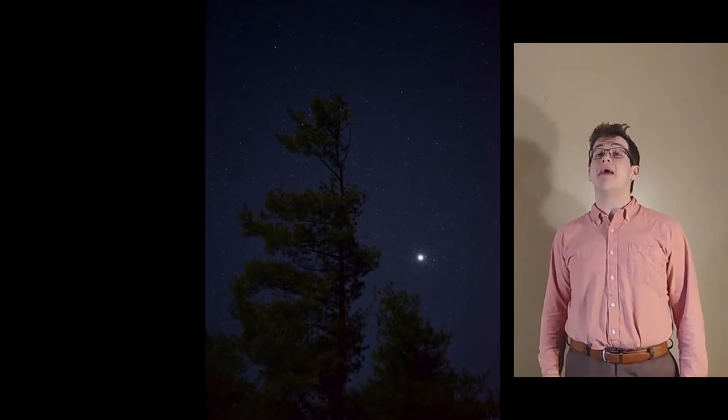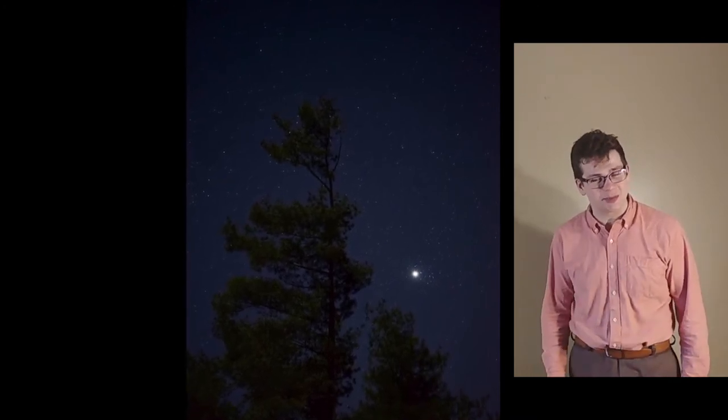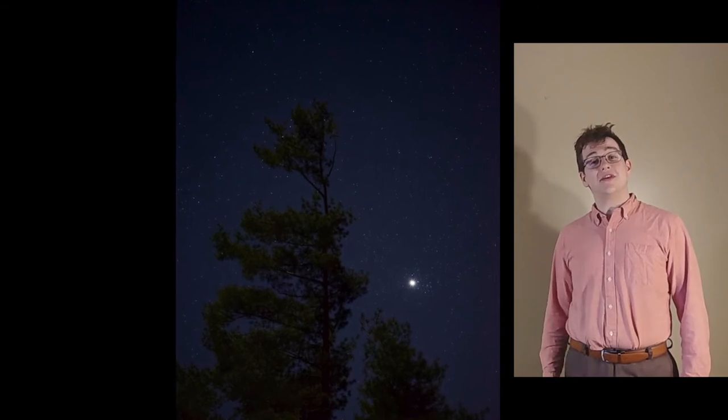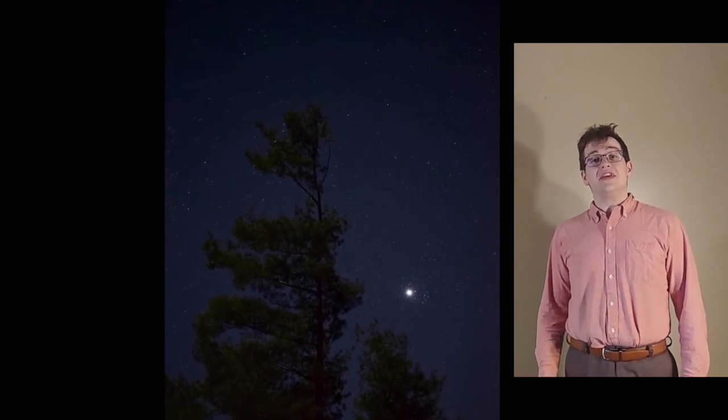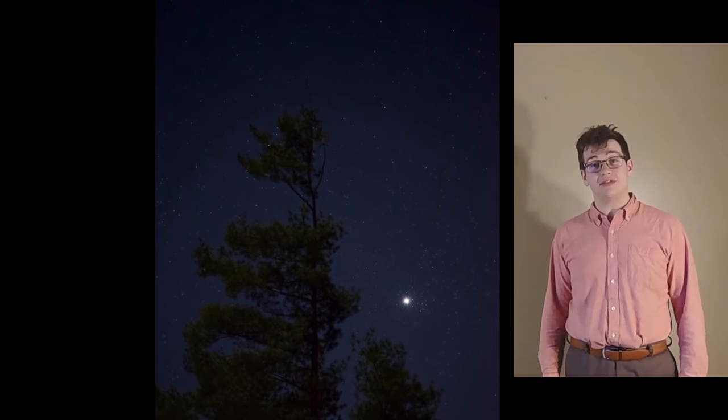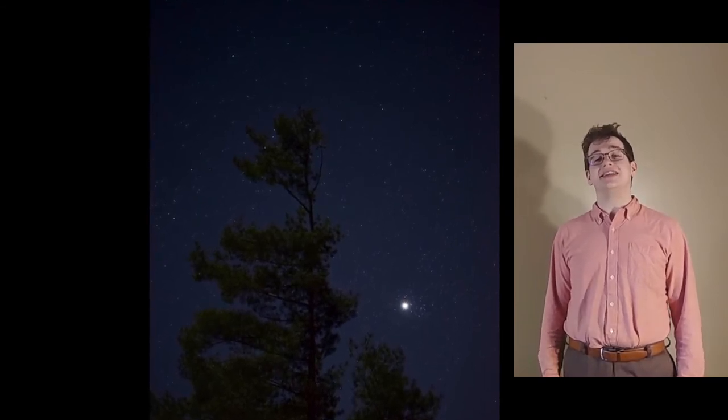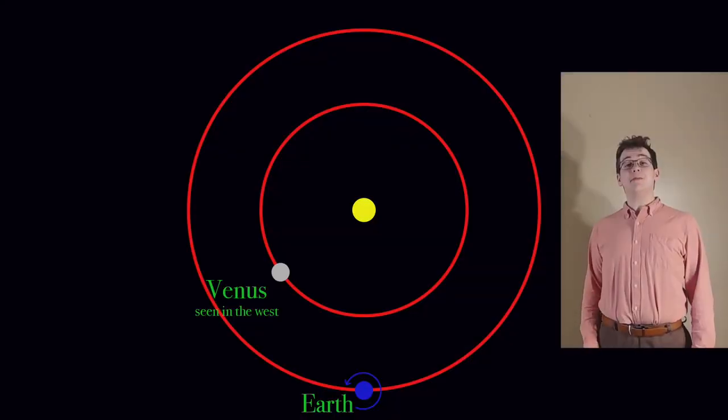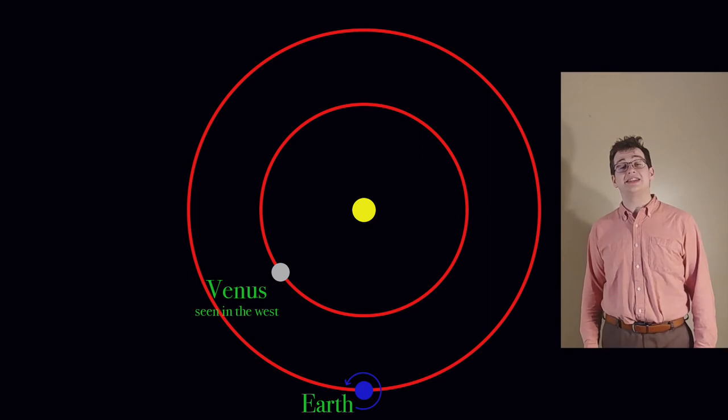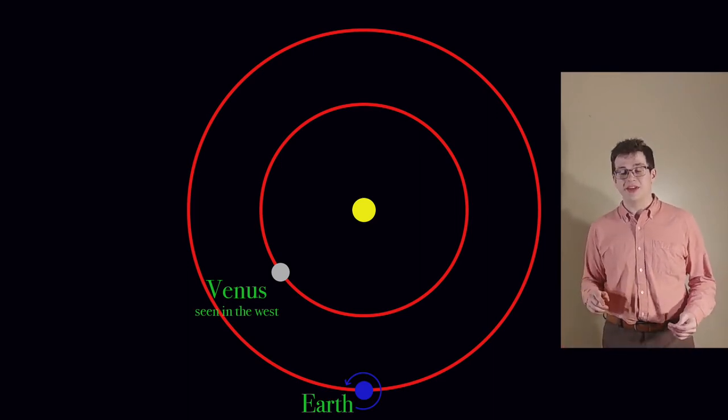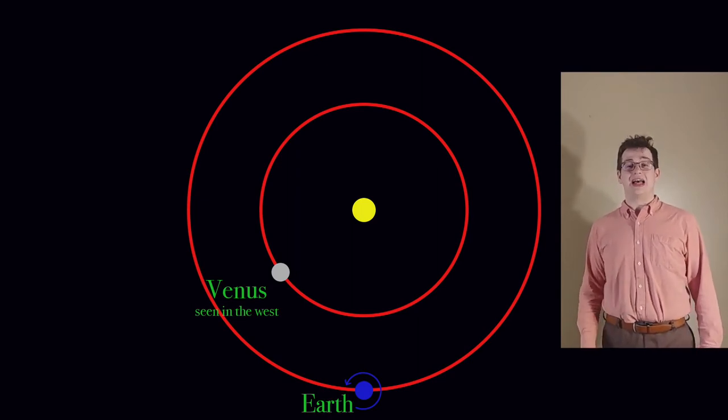Despite not being able to see the surface directly, we can still see the highly reflective atmosphere of Venus all the way here on Earth. One of my favorite facts about Venus is that it can be easily spotted in the sky if it is visible. Currently, as of early April 2020, Venus can be seen as an extremely bright point of light in the west as the sun is setting. Before people knew it was a planet, it was referred to as the evening star. This is because sometimes Venus is the first point of light to be seen as the sun is setting.